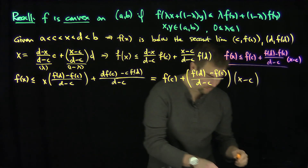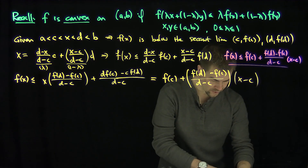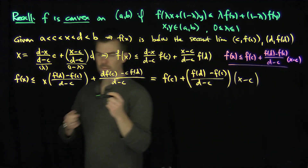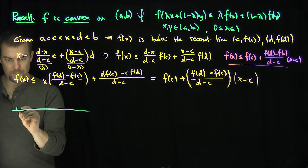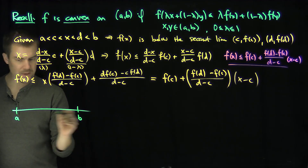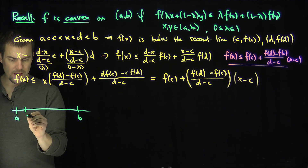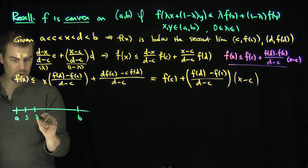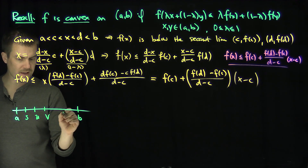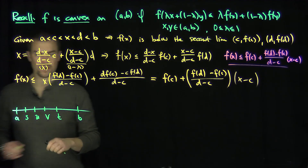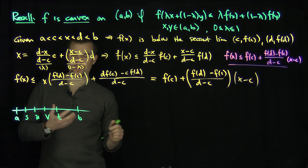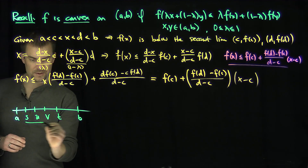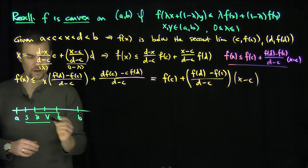Now we're ready to proceed to our proof of continuity. I'm going to use this inequality twice. I'll pick points a < s < u < v < t < b inside the interval, and apply the secant-line inequality on the range [s, v] and on the range [u, t].